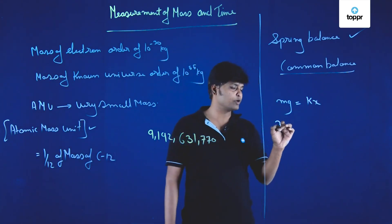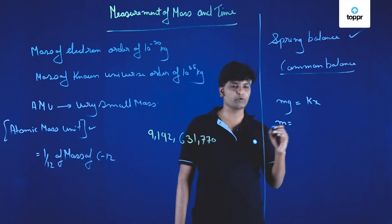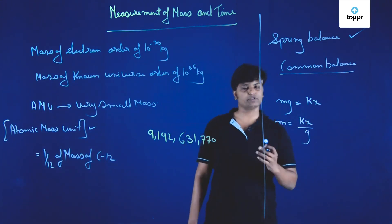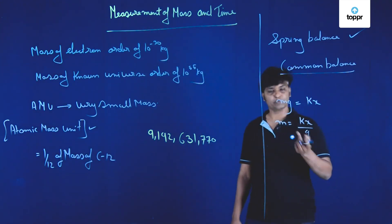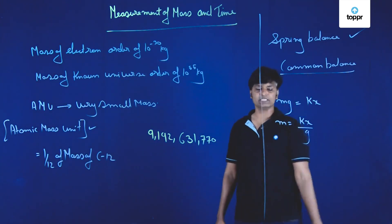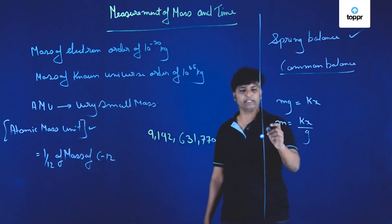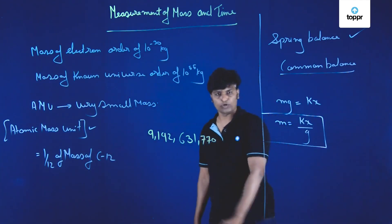If I want to calculate mass, then the equation becomes M equals KX divided by G. I know K which is the spring constant, X is the displacement made by the spring, and G is the acceleration due to gravity. On the basis of this I can calculate the mass.